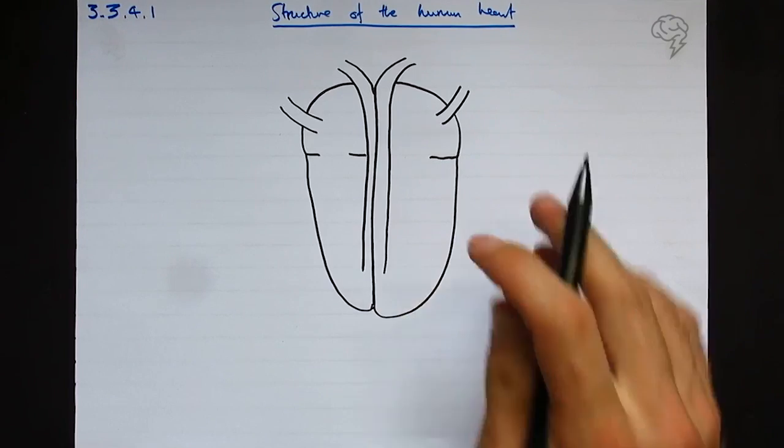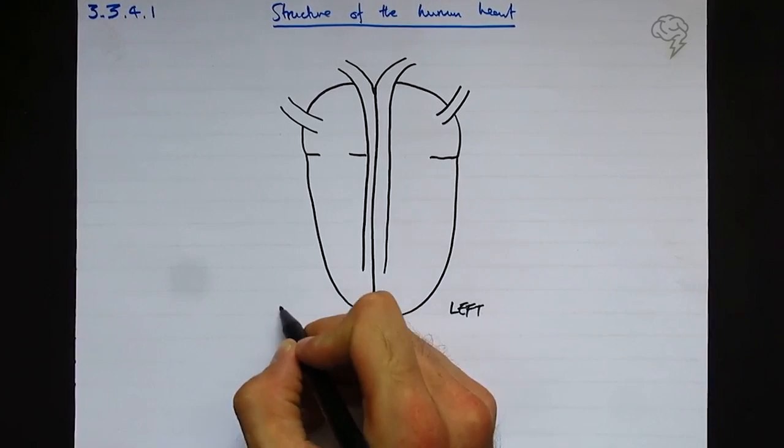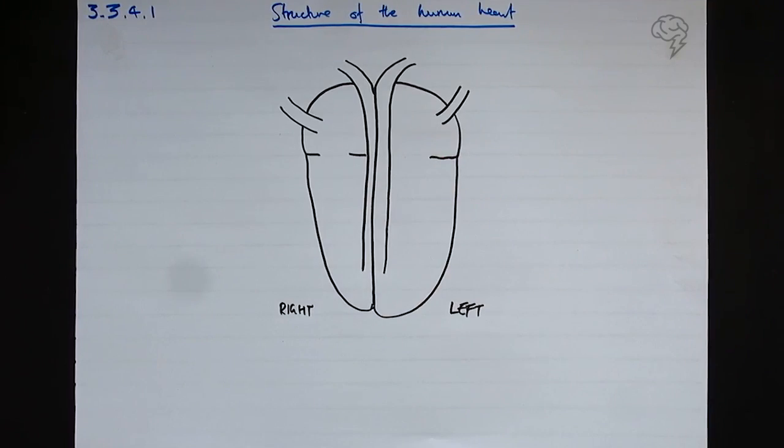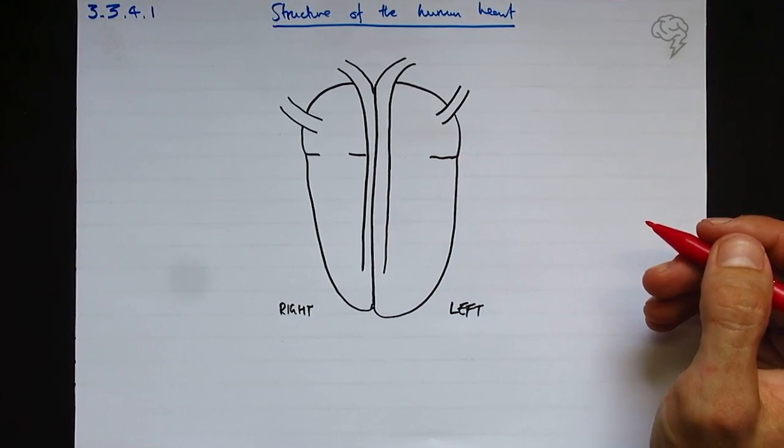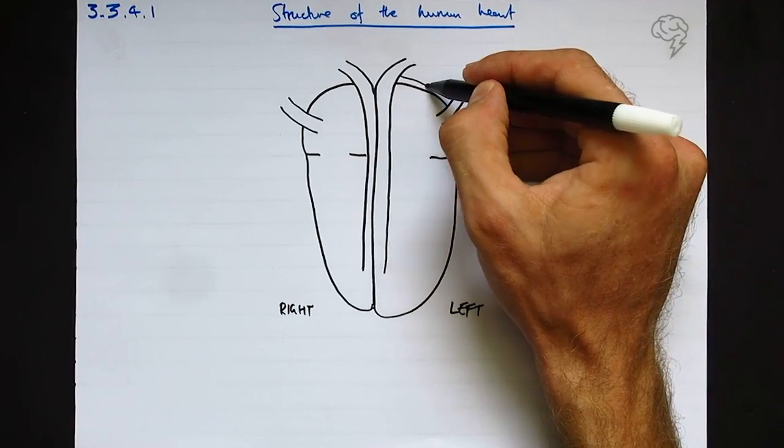Let's label: we have the left side and the right side. We also have the two top chambers - these are called the atria plural, or atrium singular. I'm going to draw my muscle on the outside of the heart to make it complete. The atria don't need very much muscle because they're only pumping blood down into the ventricle.